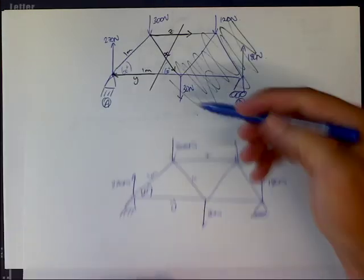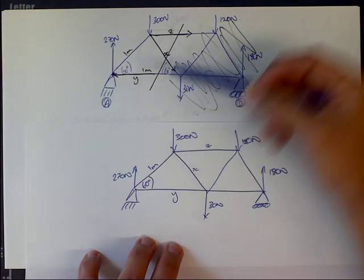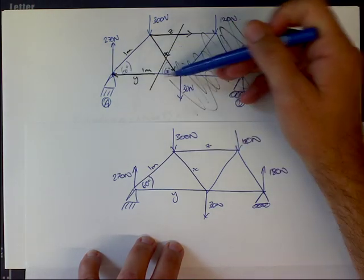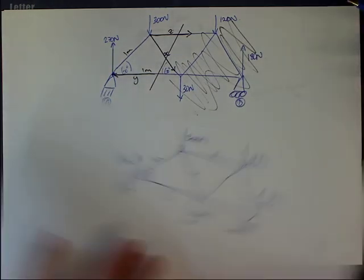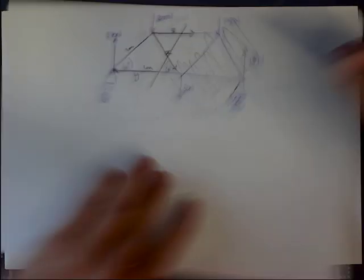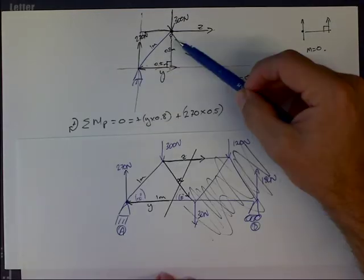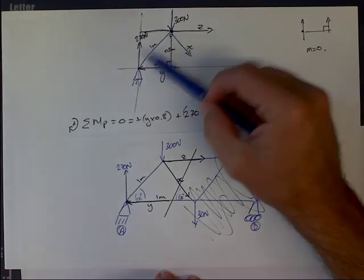We're going to do this using the method of sections. We cut a section through all three of those members and turned the truss members into forces, guessing the direction of those members. Then we redraw that particular section as a series of forces with the unknowns and the known forces.